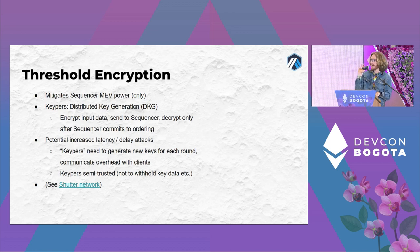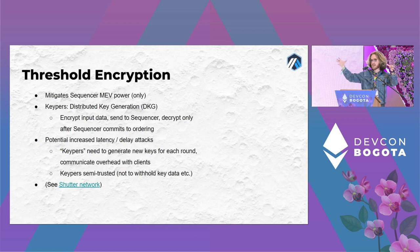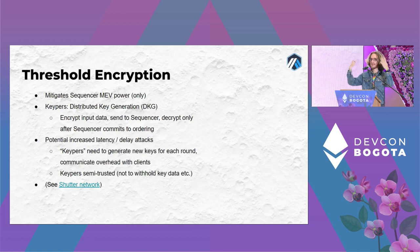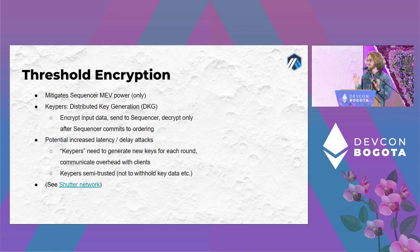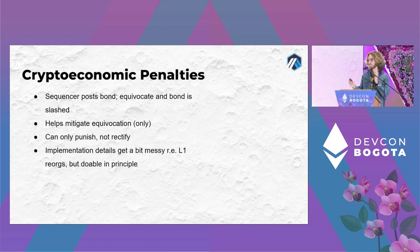Some potential concerns: the parties doing distributed key generation could collude and reveal transaction contents to the sequencer early, or delay revealing keys. Also, remember this is all about improving latency — threshold encryption requires rounds of communication, so it inevitably adds some latency even in the normal case. These are real concerns. But these two techniques — staking penalties and threshold encryption — could be applied to a centralized sequencer without truly decentralizing it.